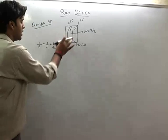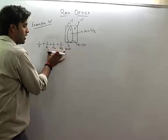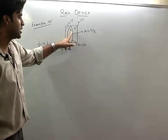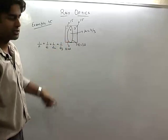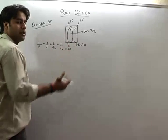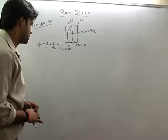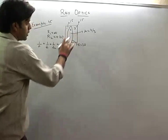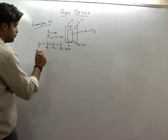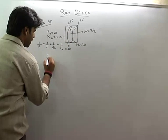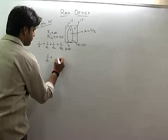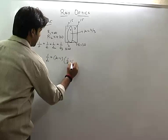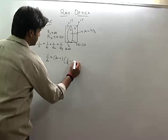So, 1/f total is equal to 1/f1 + 1/f2 + 1/f3. If water is filled between the lenses, it will also act as a lens. We take these three different focal lengths using the lensmaker's formula: 1/f1 = (mu - 1) × (1/r1 - 1/r2).